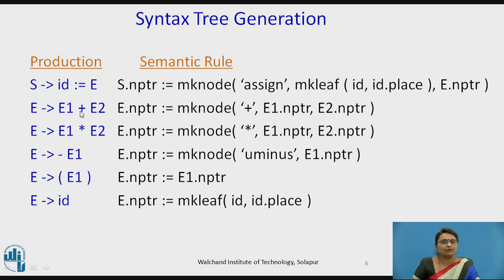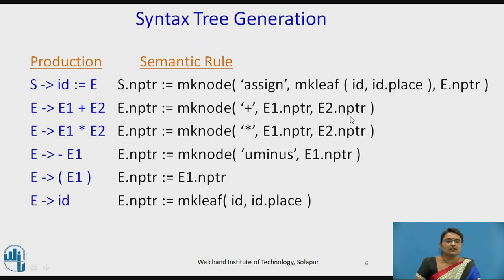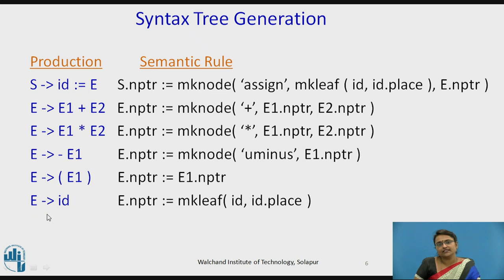Similarly, for E assigns to E1 plus E2, the pointer is generated by creating a plus node where the left node is E1 and the right node is E2, and the pointers are assigned accordingly. For multiplication, a node is similarly created. For unary minus applied to E1, a node is created with U-minus. For E producing ID, it simply generates the identifier, which is the leaf node.